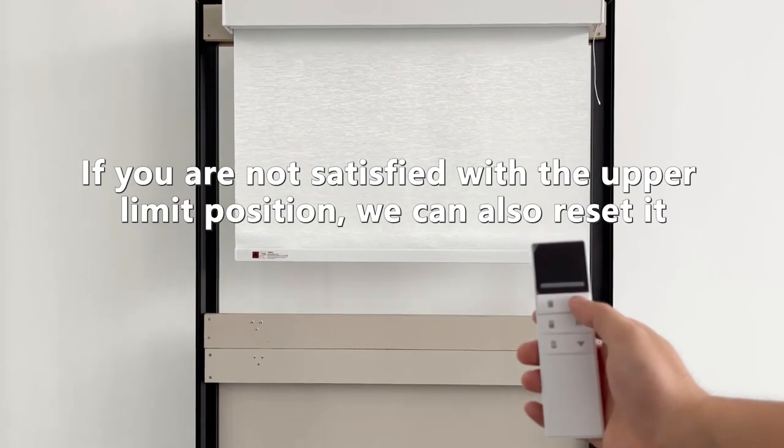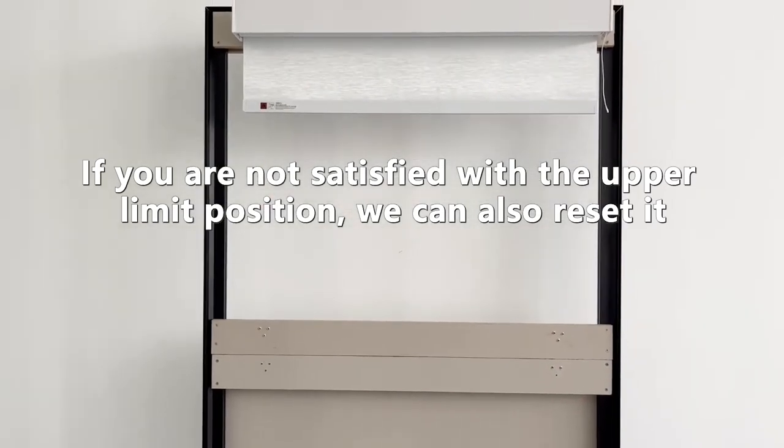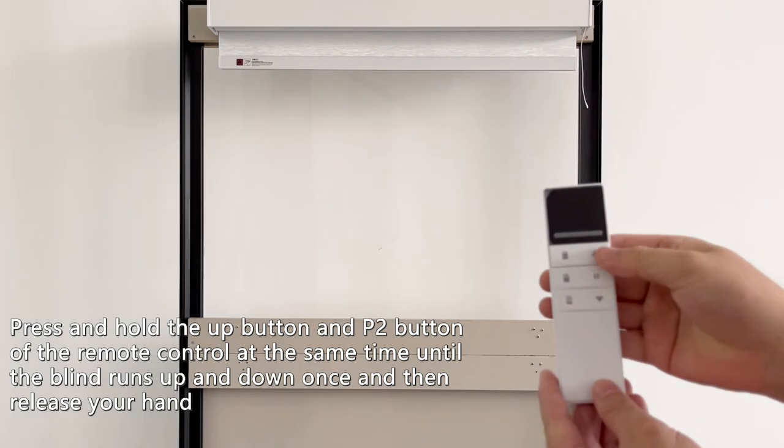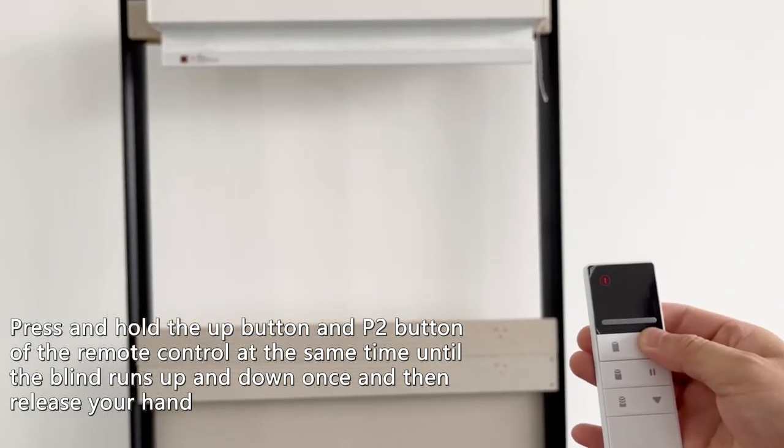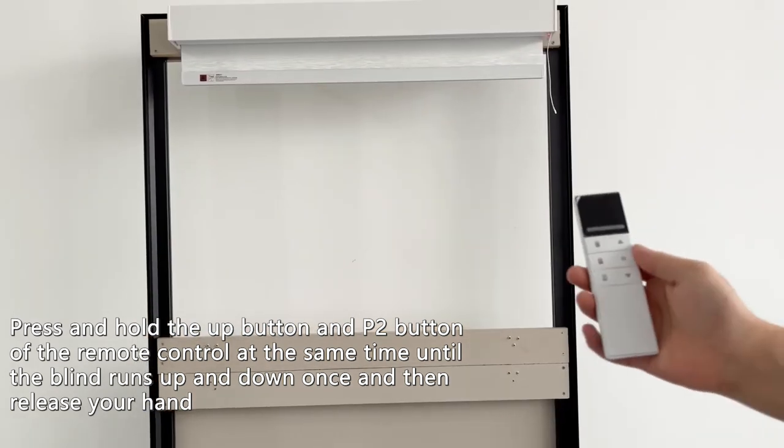If you are not satisfied with the upper limit position, we can also reset it. Press and hold the up button and PR button of the remote control at the same time until the blind runs up and down once and then release your hand.